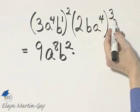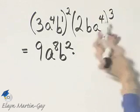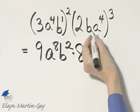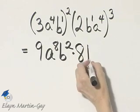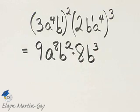Here, 2 cubed. That's 2 times 2 times 2, or 8. B, this is an understood power of 1. 1 times 3 is 3, so B cubed.